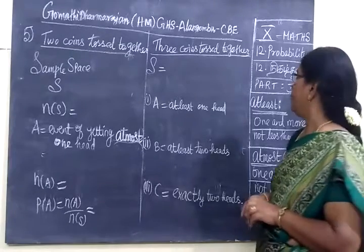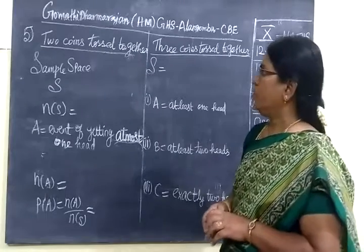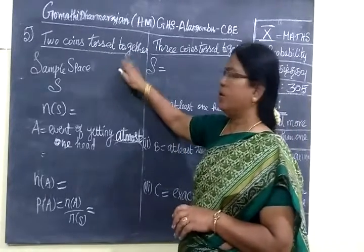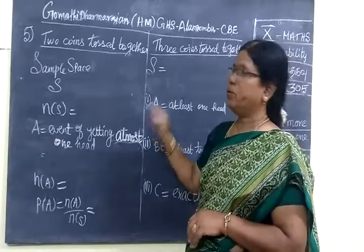Now we see page 305 in probability, problem 57. Two coins are tossed together. We are tossing two coins at a time, not one coin, two coins.